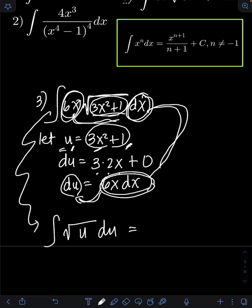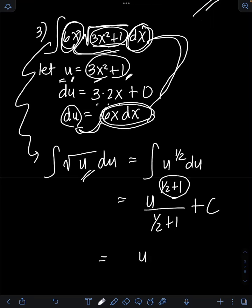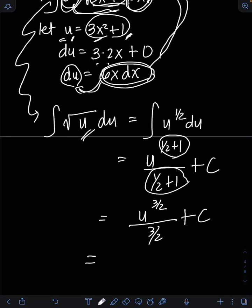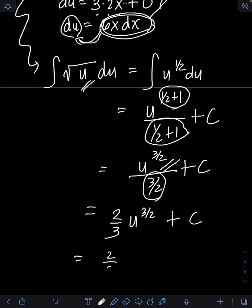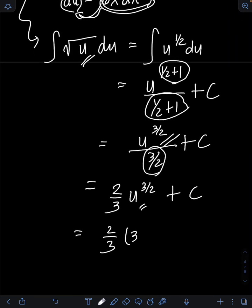Substituting: the square root of 3x squared plus 1 becomes the square root of u, and 6x dx becomes du. We can evaluate this using the power rule. Transforming to fractional exponent: square root of u is u to the 1/2. Applying the power formula: integral of u to the 1/2 du equals u raised to 1/2 plus 1, over 1/2 plus 1, plus C — that's u to the 3/2 over 3/2 plus C. Simplifying the complex fraction: the reciprocal of 3/2 is 2/3. Transforming back, the final answer is 2/3 times quantity 3x squared plus 1, raised to the 3/2, plus C.